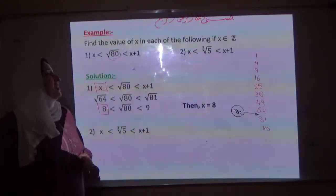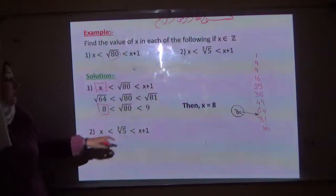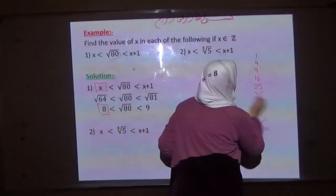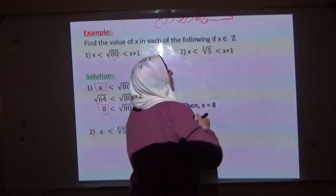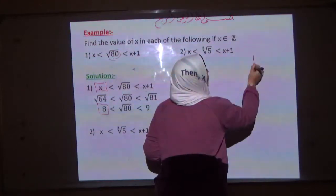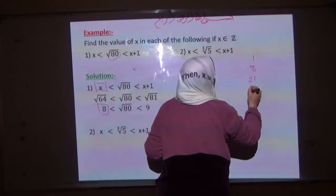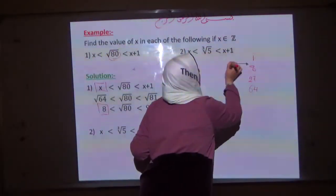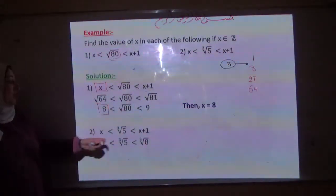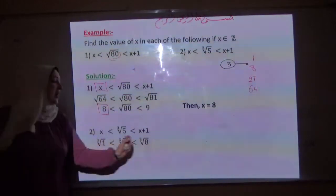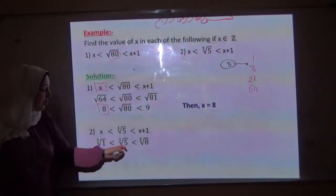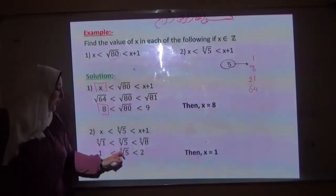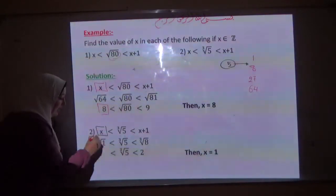Second: cube root 5 is more than x and less than x plus 1. Now we write the perfect cube numbers, because we use cube root of 5: 1, 8, 27, 64, and so on. 5 lies between 1 and 8. Then cube root 5 is more than cube root 1 and less than cube root 8. Cube root 1 is 1 and cube root 8 is 2. So cube root 5 is more than 1 and less than 2, therefore x equals 1.